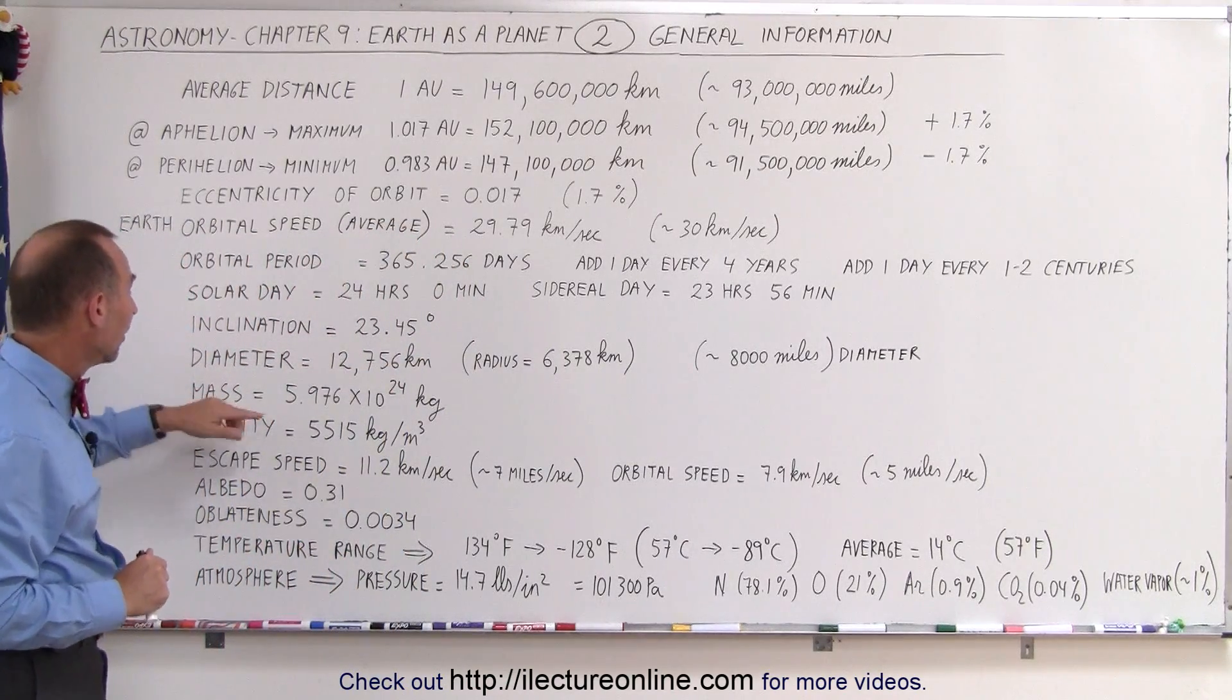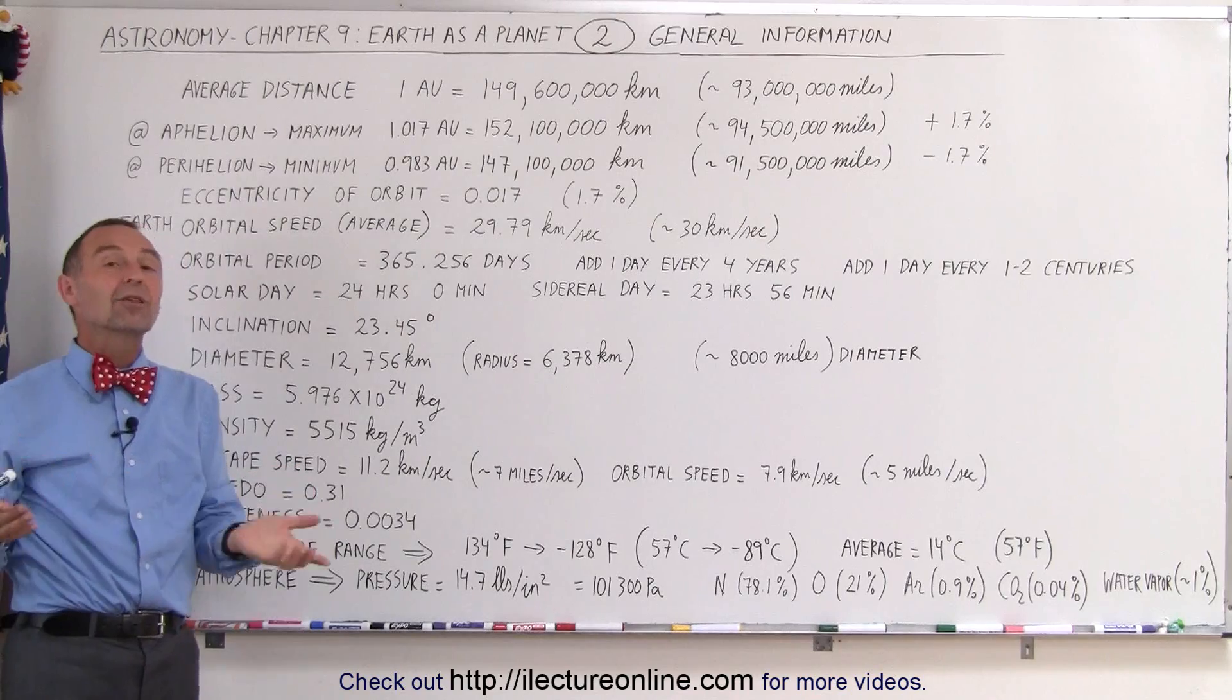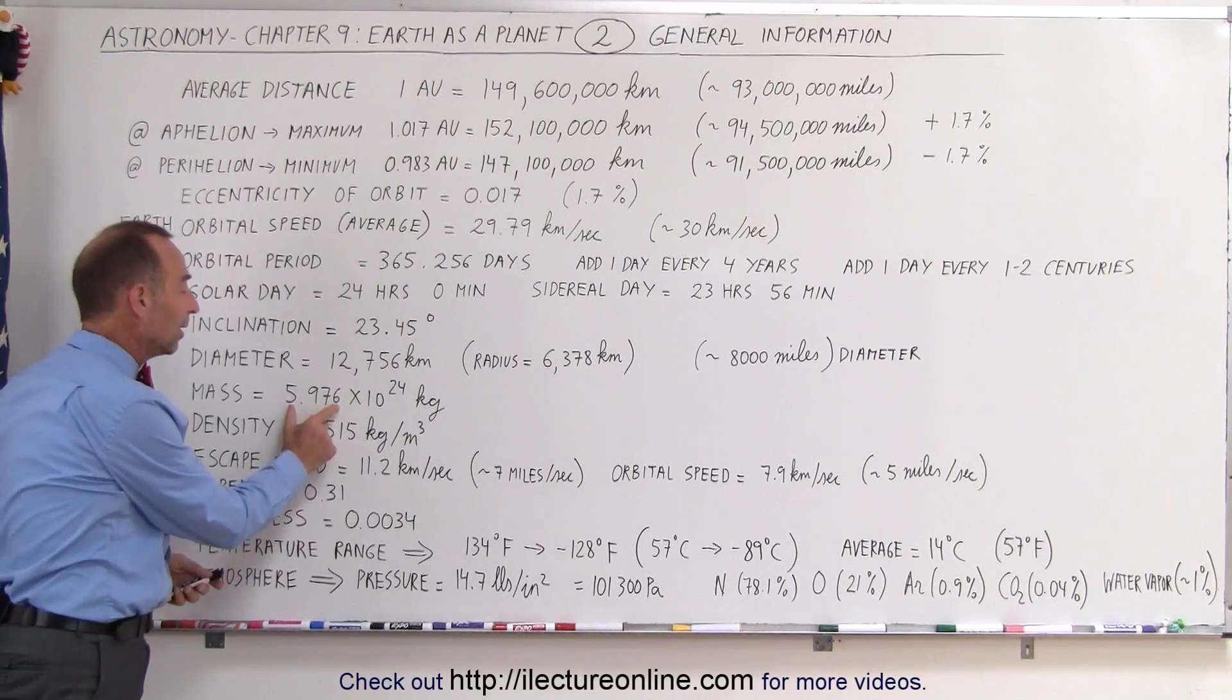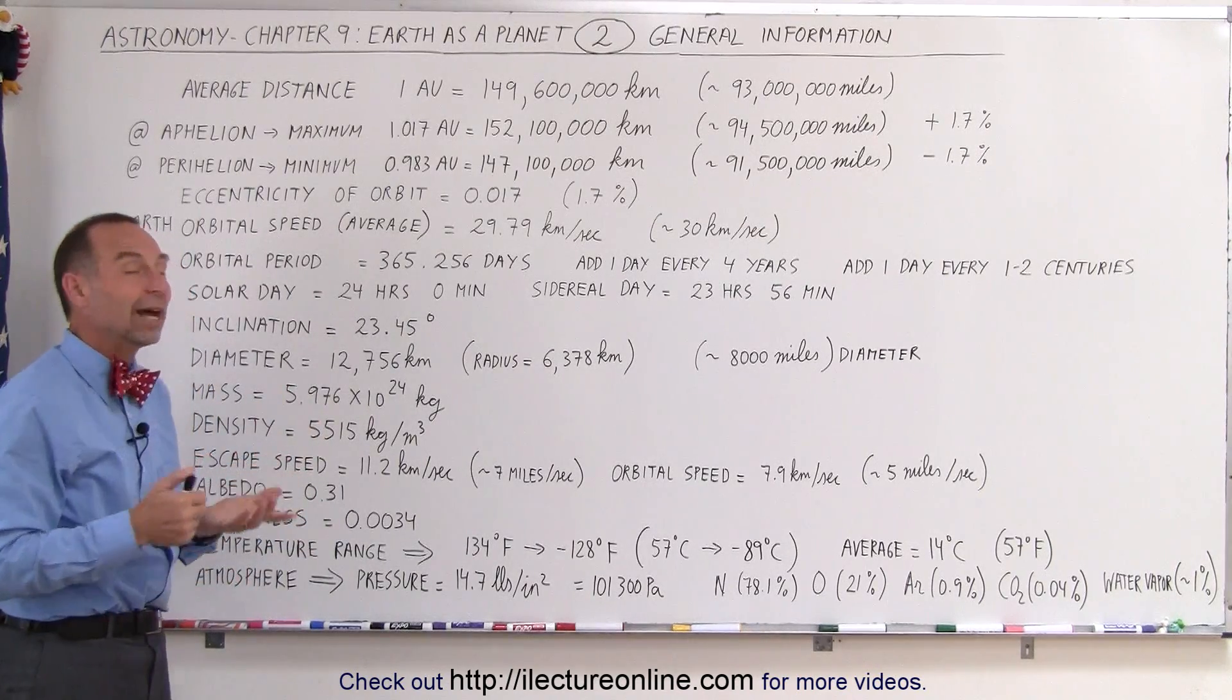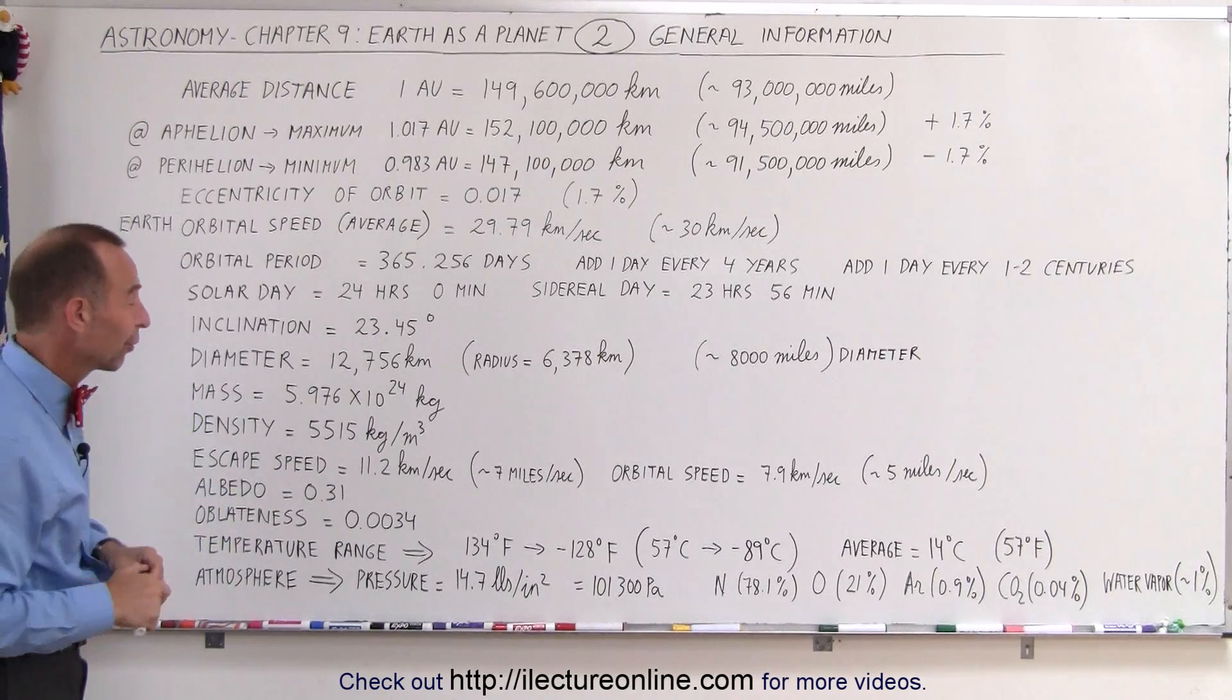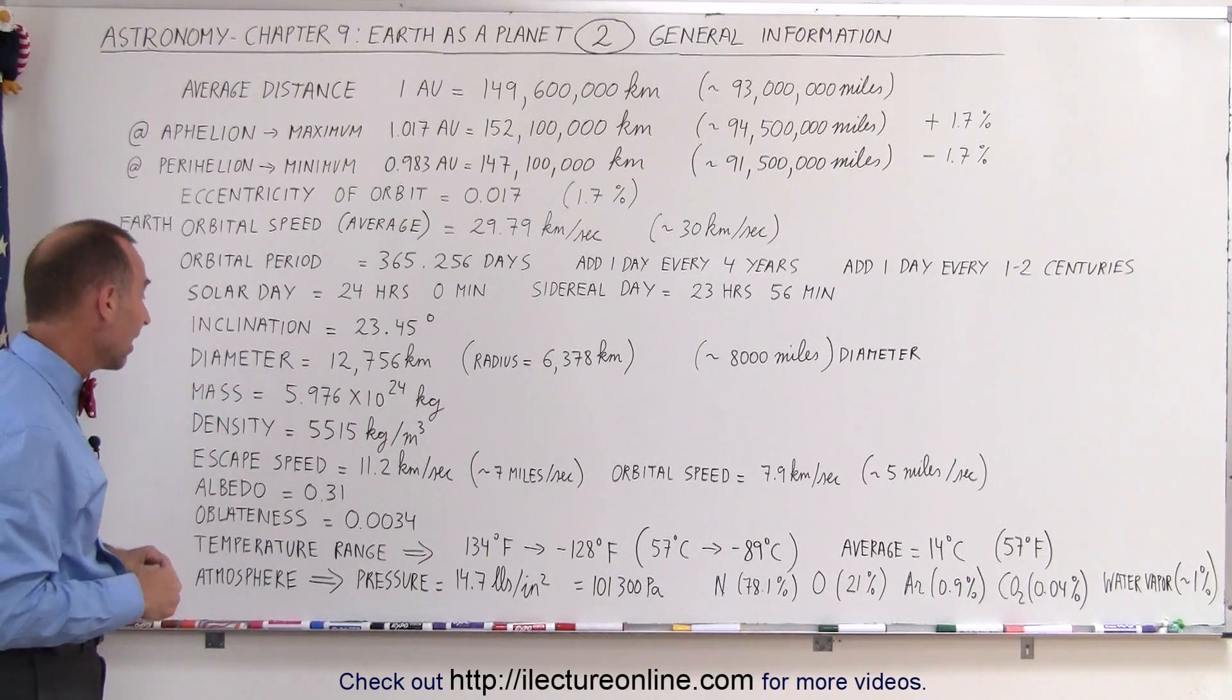The mass of the Earth, we can say 6 times 10 to the 24 kilograms. If you want to be a little bit more accurate, we write it as 5.976 times 10 to the 24 kilograms, and that's obviously a lot of kilograms.